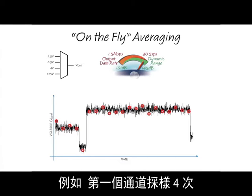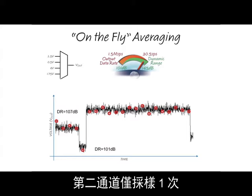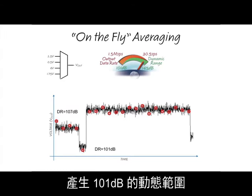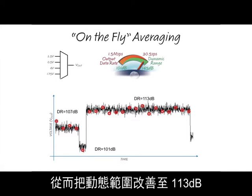For example, the first channel was sampled four times, leading to a dynamic range of 107 decibels. The second channel was sampled only once, resulting in 101 decibels of dynamic range, and the last channel was sampled 16 times, improving the dynamic range to 113 decibels.